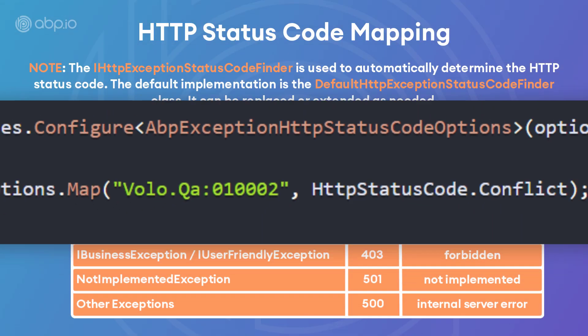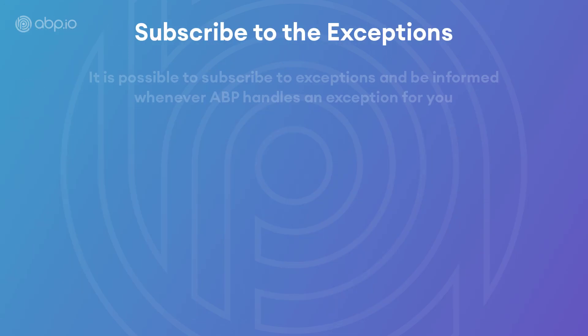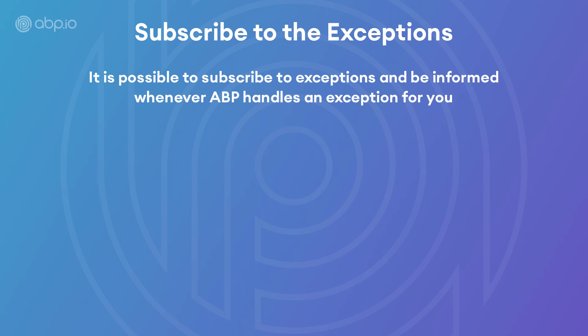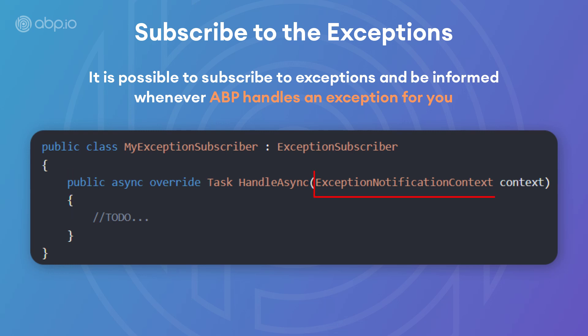You can override these mappings with custom mappings. It is also possible to subscribe to exceptions and be informed whenever the ABP framework handles an exception, since ABP automatically logs all exceptions to the standard logger. To do that, you can create a class, derive from ExceptionSubscriber, override its HandleAsync method, and the context object contains the necessary information about the exception that has occurred.